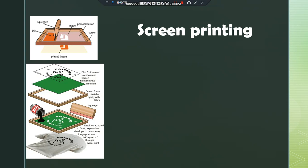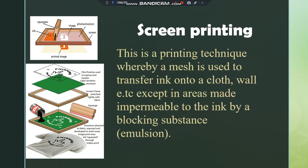Screen printing is a technique whereby a mesh is used to transfer ink onto a cloth, wall, or other surface — except in areas made impermeable to the ink by a blocking substance, which is what we call emulsion, photo emulsion, or light-sensitive liquid.